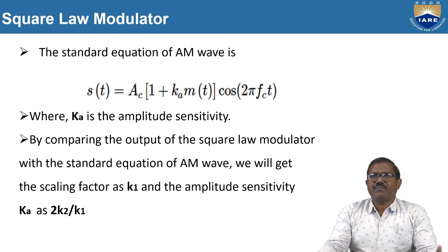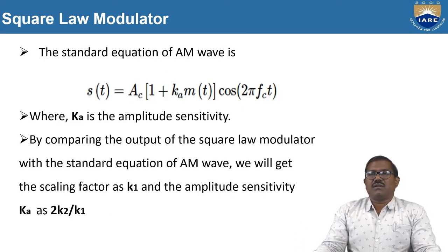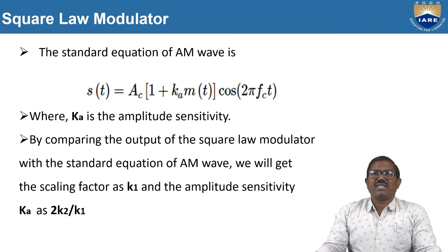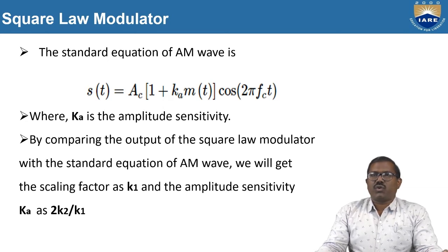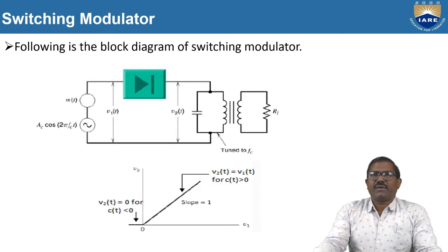K is the amplitude sensitivity, and finally you get that equation from the bandpass filter output. This is the square law modulator — we are using the square law characteristic of the diode. At low amplitude, the diode works as a square law device. At higher amplitude, it is a piecewise linear device. Using the square law characteristic of the diode, we obtain the square law modulator. Next, we discuss the switching modulator.